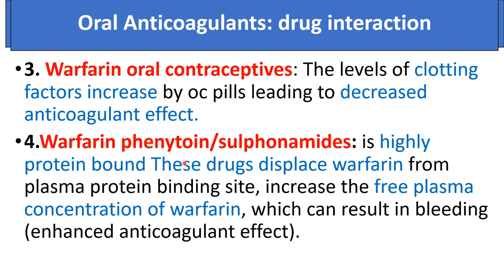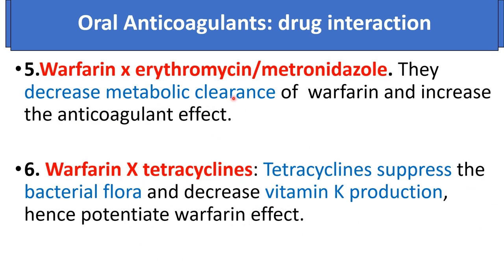Warfarin with phenytoin or sulfonamides: these drugs are highly plasma protein-bound and displace warfarin from its plasma protein binding site, increasing free plasma concentration of warfarin and enhancing anticoagulant effect, which can result in bleeding. Erythromycin and metronidazole are enzyme inhibitors that decrease the metabolic clearance of warfarin and increase anticoagulant effect. Tetracycline, a broad-spectrum antibiotic, suppresses bacterial flora, decreases vitamin K production, and potentiates warfarin effect.